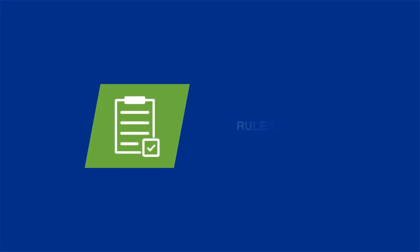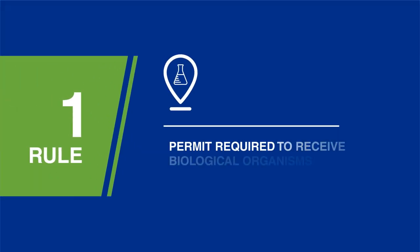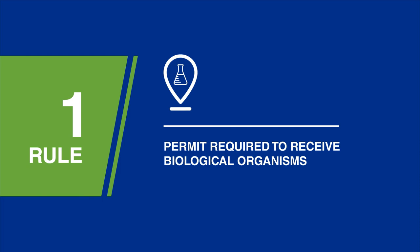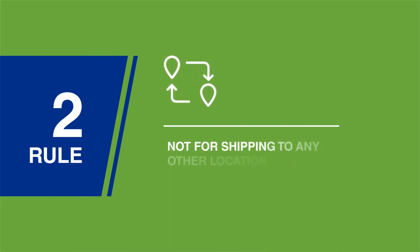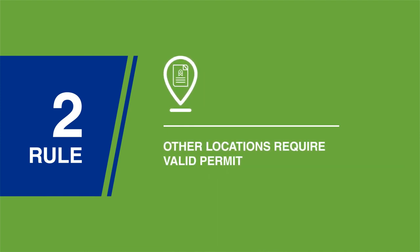Before we get started, let's review a few rules of the road. Rule 1: In order to receive biological organisms of animal origin from another laboratory or location, APHIS requires that a permit first be in place for your practice. Rule 2: This permit only allows your practice to receive these materials. You cannot ship them to any other location. Likewise, any other location would first have to have its own valid permit in place in order to receive materials at that site.